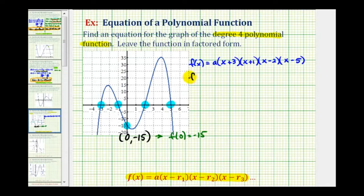So we'll substitute zero for x and set this function value equal to negative fifteen. So if x is equal to zero, we would have a times three times one times negative two times negative five, and this product must equal negative fifteen. So now we'll go ahead and solve for a. Three times one times negative two, that's negative six, times negative five is positive thirty.